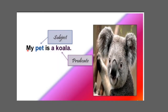Yet another example of a sentence: 'My pet is a koala.' Here, 'my pet' is the subject and 'is a koala' is the predicate. So this is a sentence — it has a subject and a predicate and expresses a complete thought.